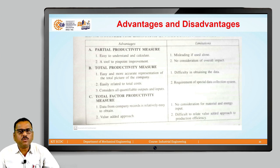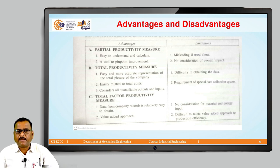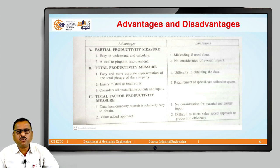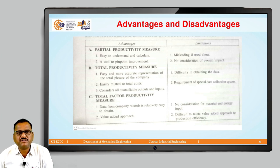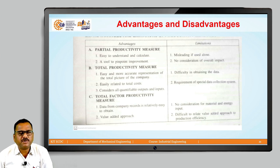The second advantage of partial productivity is it serves as a tool to pinpoint improvement — whether that improvement is due to materials, labor, or energy. The partial productivity measure clearly points out that the improvement is only because of this particular factor. For total productivity measure, the first advantage is it is an easy and more accurate presentation of the total picture of the company, and the second advantage is it is easily related to total cost.